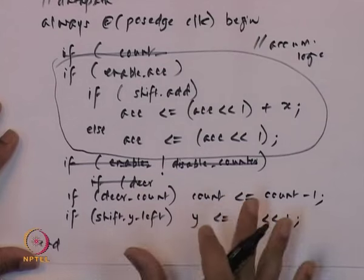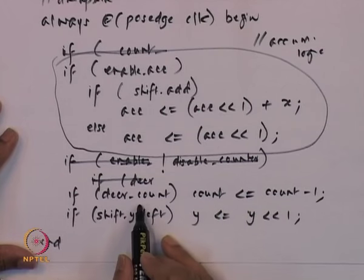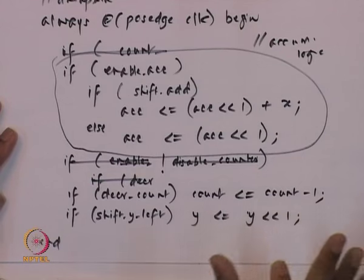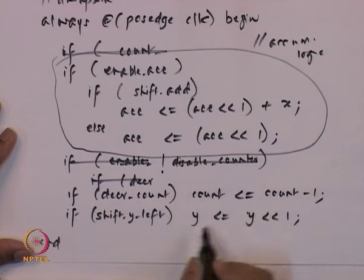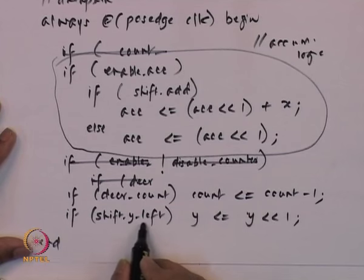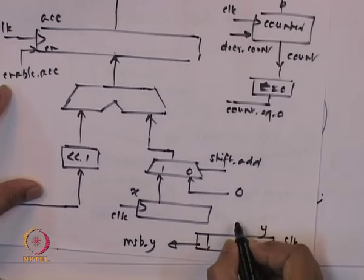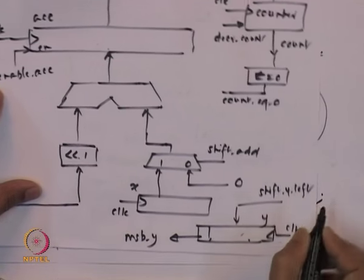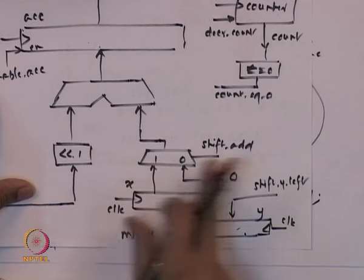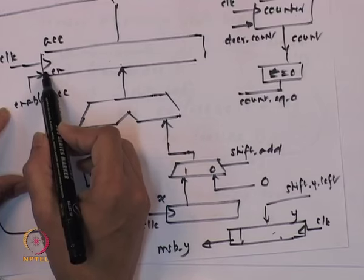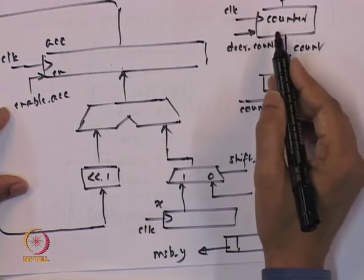For the counter: if decrement_count is asserted, the counter decrements; otherwise it stays at its current value — effectively disabling it. For the Y shift register: if shift_Y_left is asserted, the register shifts left by 1 bit; otherwise it stays. The signals shift_add, enable_accumulator, shift_Y_left, and decrement_count are all generated by the FSM controller.